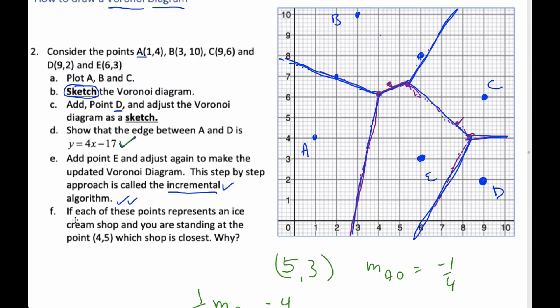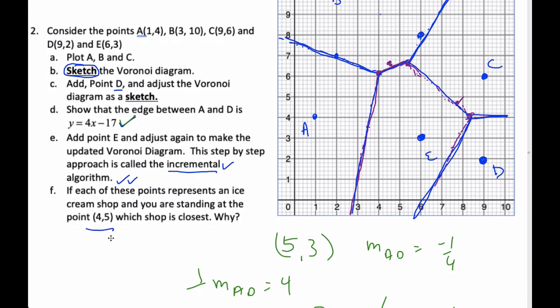And then finally, if each of these points represents an ice cream shop. Ice cream. Mmm. Yum. And if I'm standing at 4-5, I'm standing right here at 4-5. Which shop is closest? Well, E. E is closest because I am within the cell of E. And so I would go straight to E and get my ice cream.